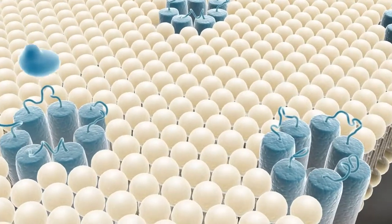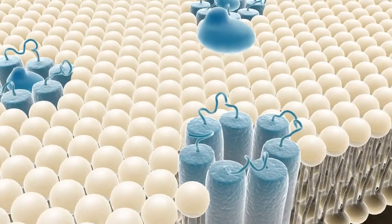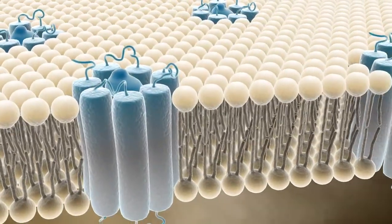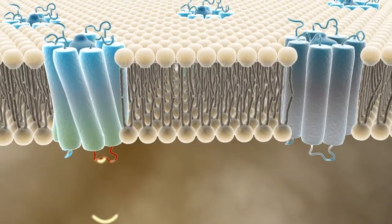GPCRs work by binding naturally occurring substances, known as ligands, on the outside of the cell, which cause the GPCR to change shape, allowing the GPCR to transmit signals to the inside of the cell.